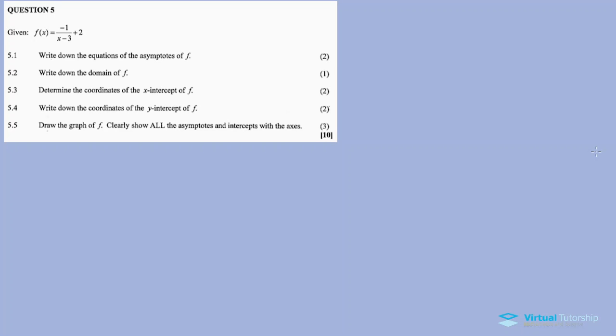Now, 5.1: write down the equations of the asymptotes of F. From grade 11, in fact from grade 10, the functions we discussed include the tan graph. An asymptote is the vertical line.